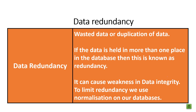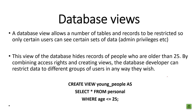The next thing to discuss is database views. Think about views as filtering the information. A database view allows tables and records to be restricted so that only certain users can see certain sets of data. This might be privileges assigned by a database administrator for different staff roles and managers. Different users could see different parts of the database. For example, a view might hide records of people who are older than 25. The language we use to talk to databases is SQL — Structured Query Language.